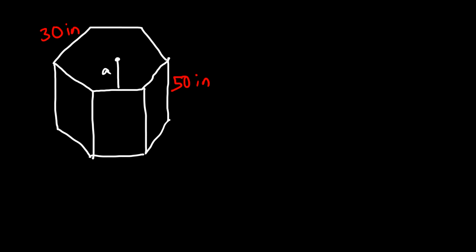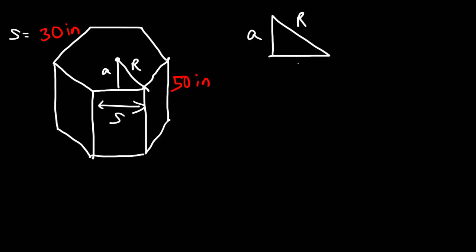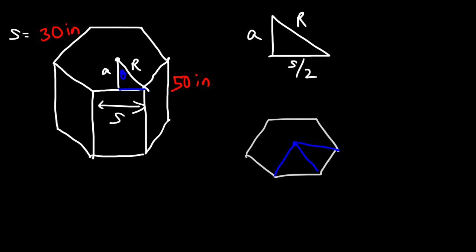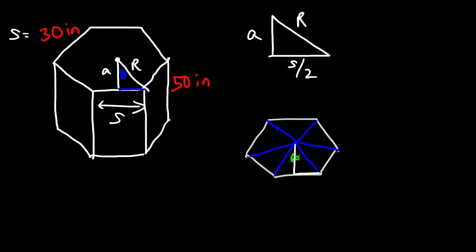We'll call the side length S, which is 30. Let's make a right triangle: R is the radius, A is the apothem, and S divided by 2 is the half side length. We'll call this angle theta. For a hexagon, starting from the center we can split it into six pieces. A full circle is 360, so 360 divided by 6 means this angle is 60. If we make a right triangle, that means theta has to be 30 degrees.